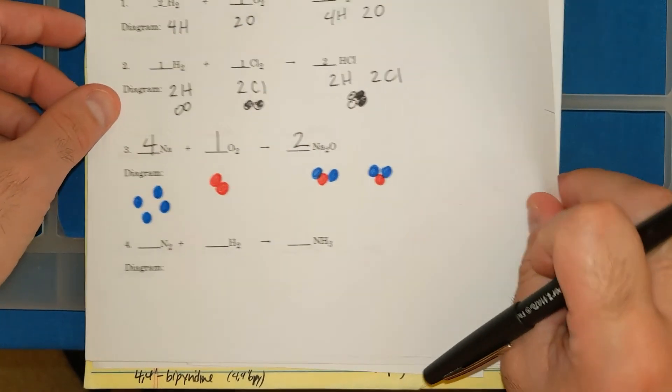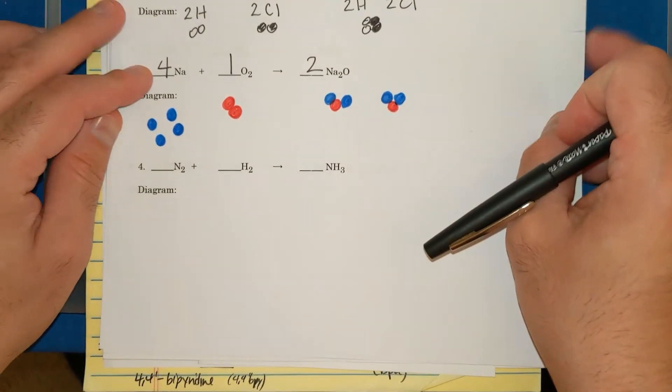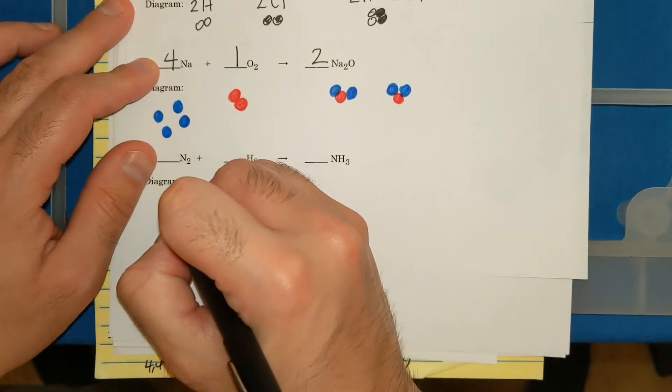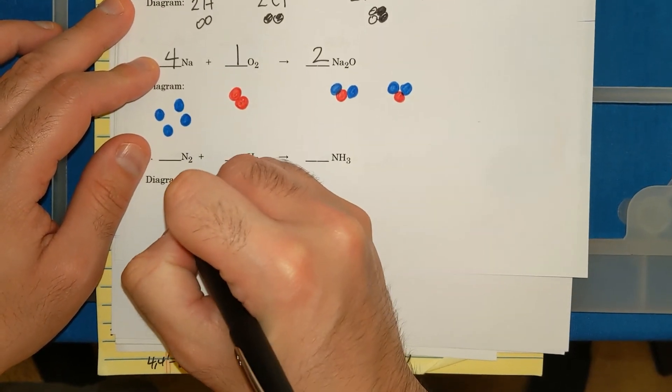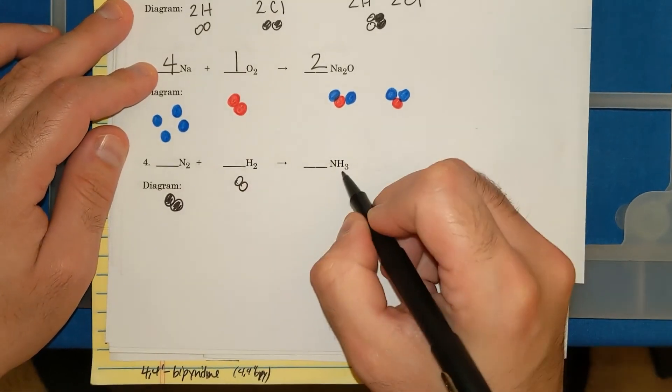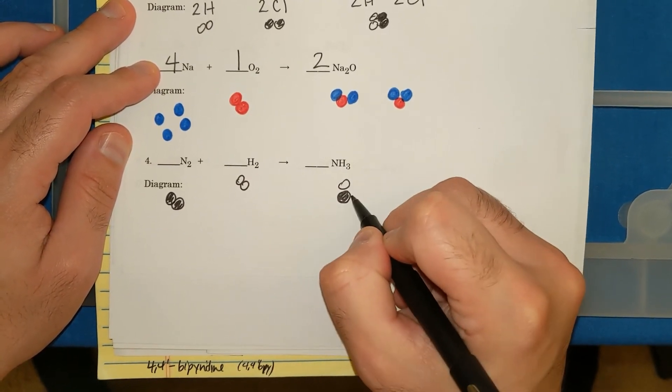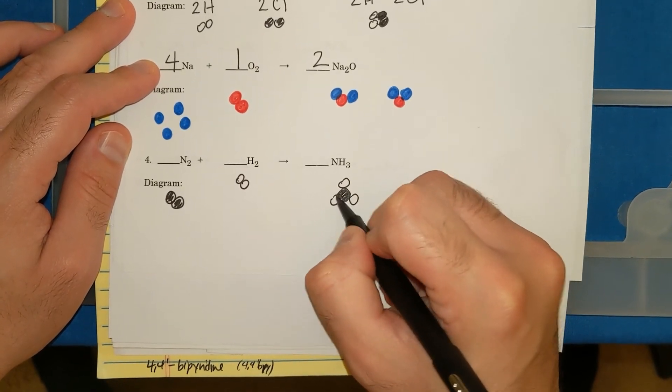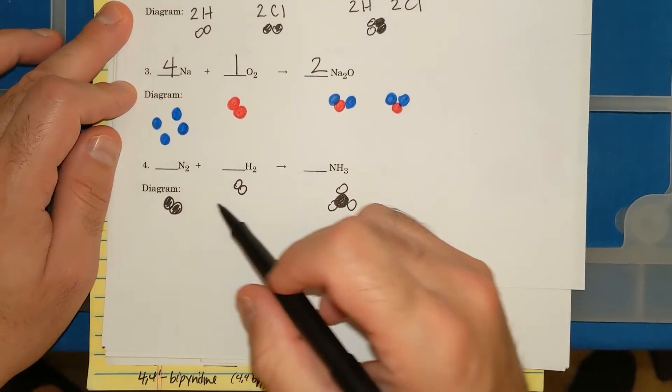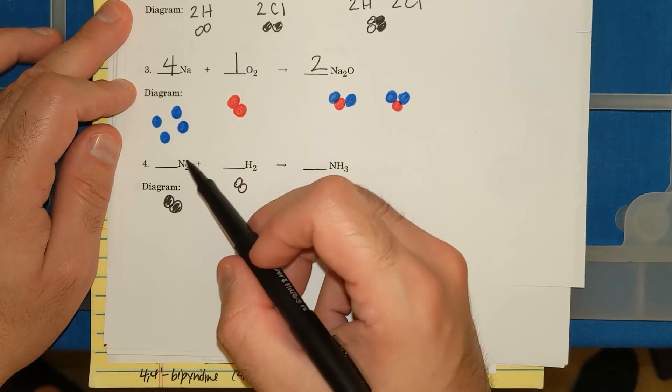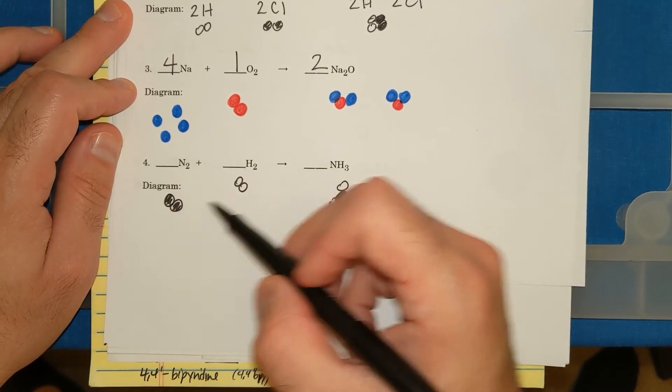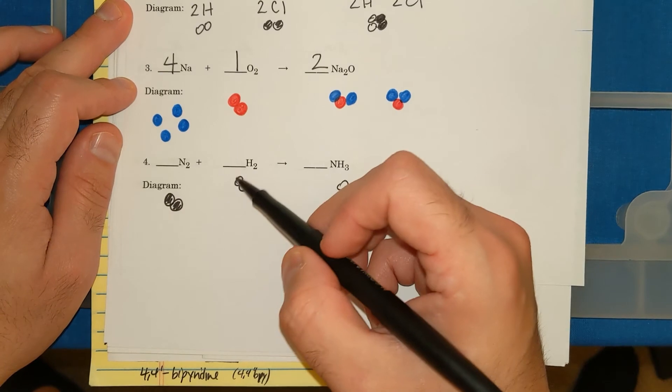Let me do the last one for this quick video. I have N2 and H2. Let me say N2 is shaded, H2 unshaded. And then I have NH3. N is shaded, H is unshaded.